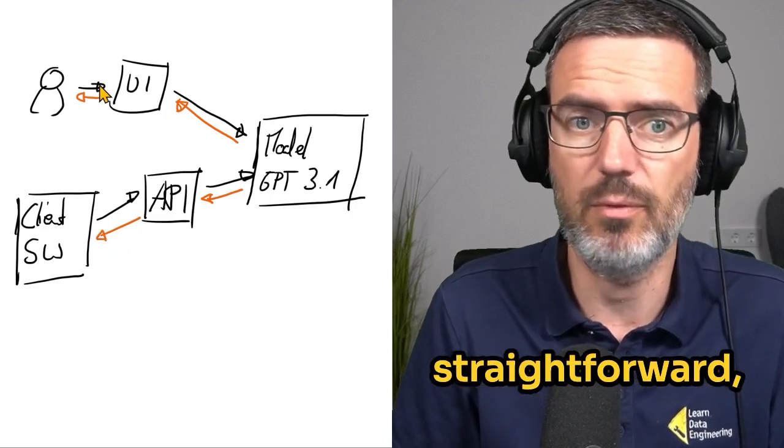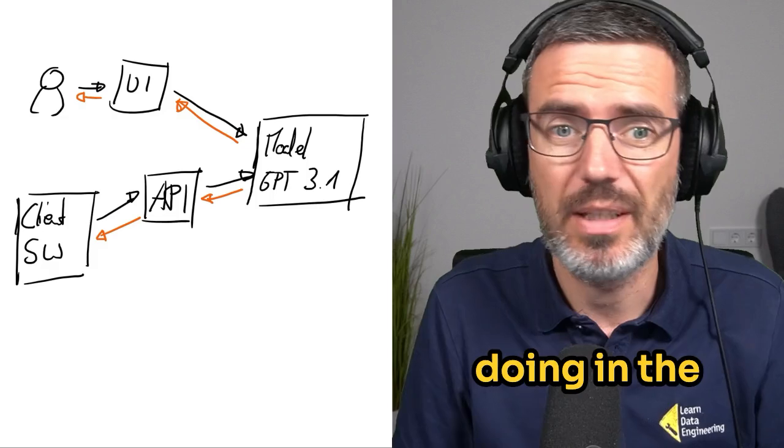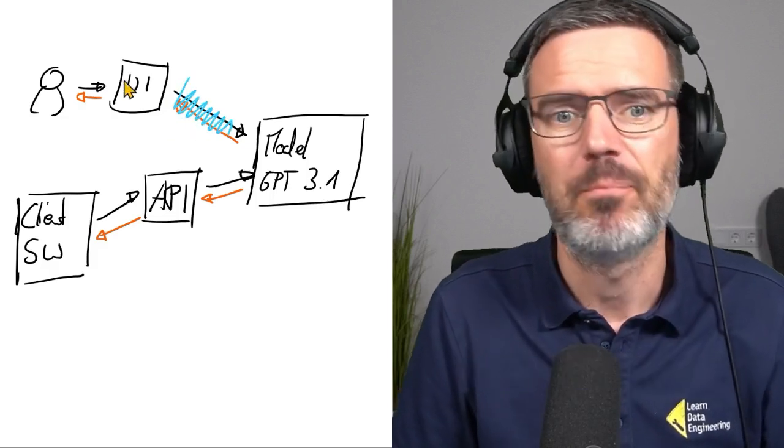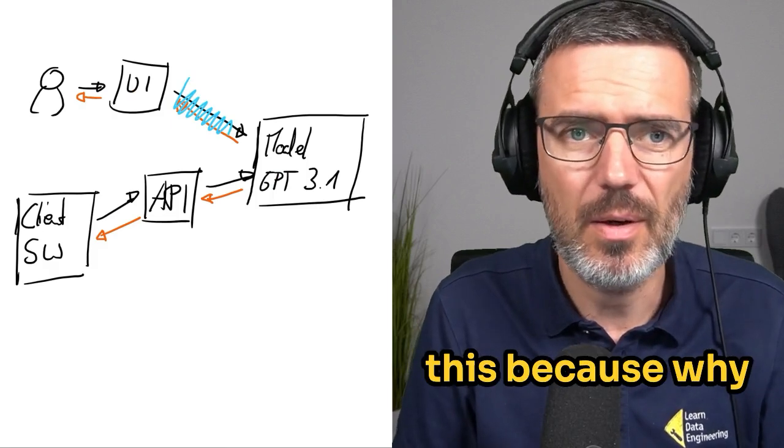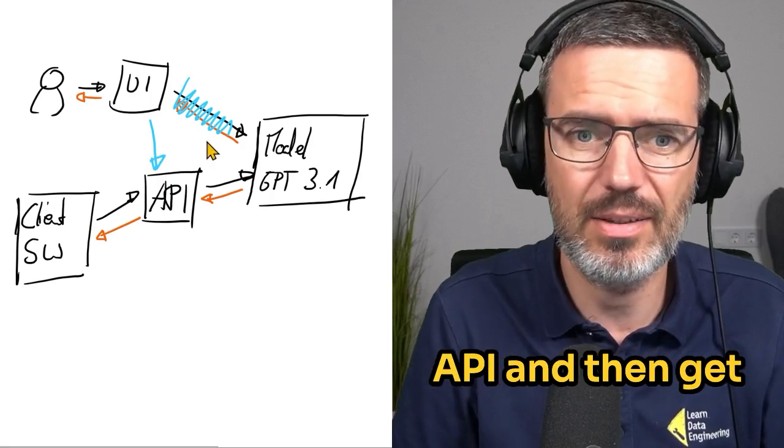Seems pretty straightforward, right? Now, the thing is, this is not how this works. What they're doing in the background, this here, this doesn't exist, usually. You don't need this, because why not just have the UI ask the API and then get the results back?